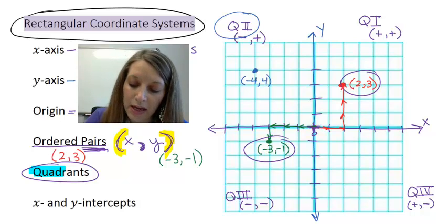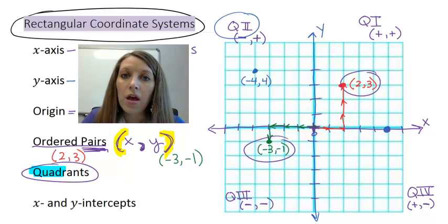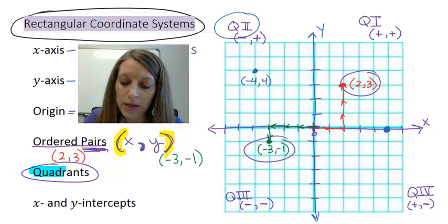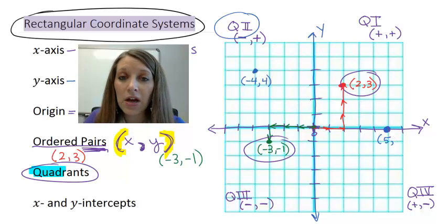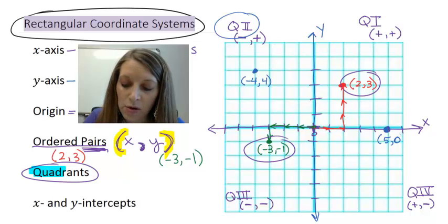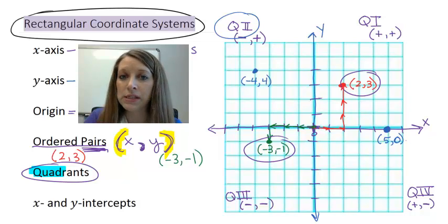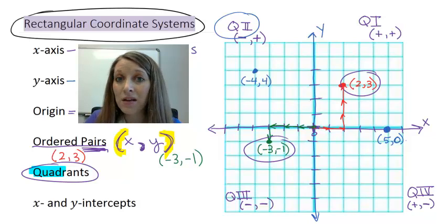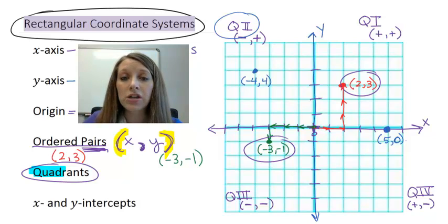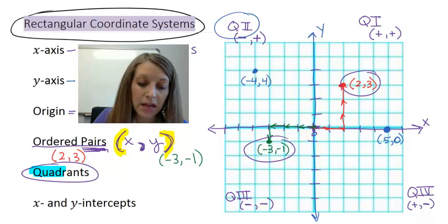A second example is I could pick a point right here. The ordered pair associated with this point is right five units. And then I cannot count up or down any from my x-axis. So my y-coordinate is actually zero. Now, that becomes a little complicated to figure out what quadrant it's in because it's kind of in two different quadrants. And so actually, it's a trick question. We do not say that is in any quadrant whatsoever. We say that that is an intercept, which is our last vocabulary word.